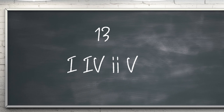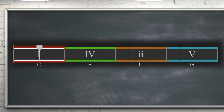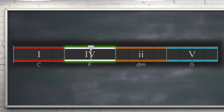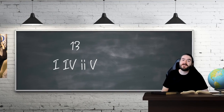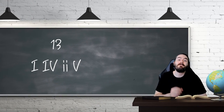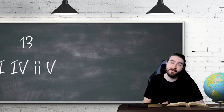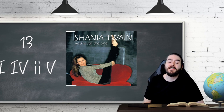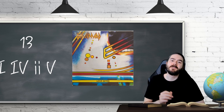Unlucky for some, number 13 is 1-4-2-5. Chord progressions frequently use four chords, and in major keys this will often involve the major chords 1, 4, and 5 paired with a minor chord. Examples of this progression include You're Still the One by Shania Twain and Love Bites by Def Leppard.